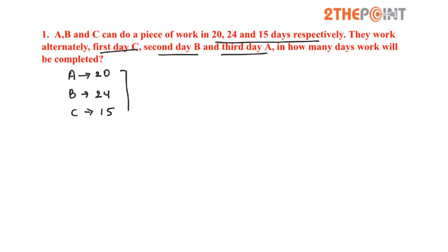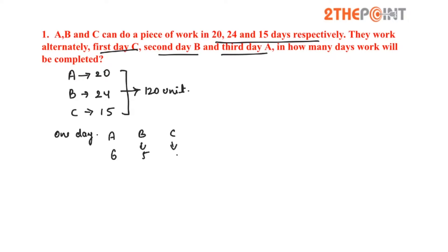We know how to find the total work — that is nothing but the LCM of all three, which is 120 units. Now find the one-day work of A, B and C. A will do 6 units of work, B does 5 units of work, and C does 8 units of work. So altogether A plus B plus C do 19 units of work.